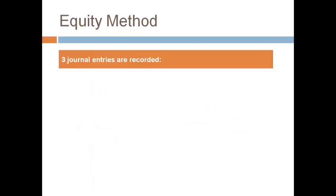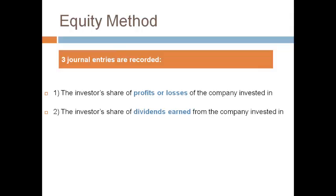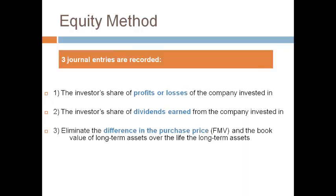Three journal entries are made at the end of each period when using the equity method. The first two entries change the investment account for changes in the investee's owner's equity, which changes with profits, losses, or dividends. The third entry eliminates the difference in the cost of the investment and the owned percentage of the investee's owner's equity reported on the balance sheet. The investment was initially reported at fair market value on the purchase date, while the investee's owner's equity is reported at book value.